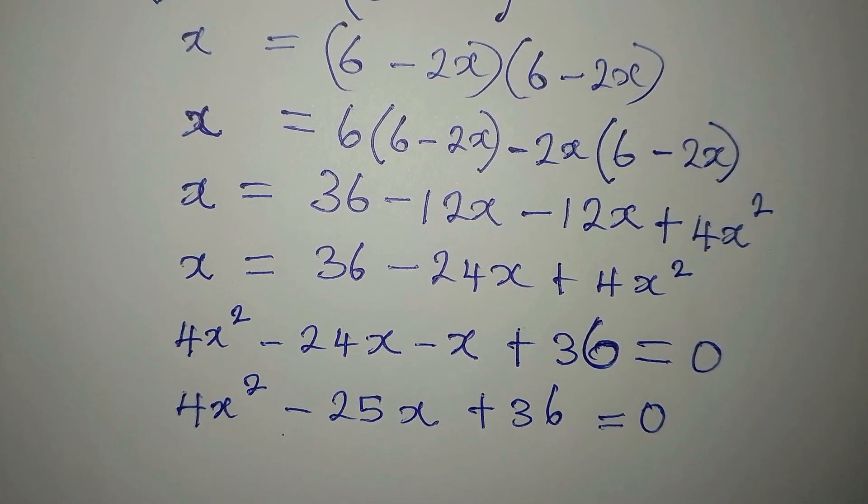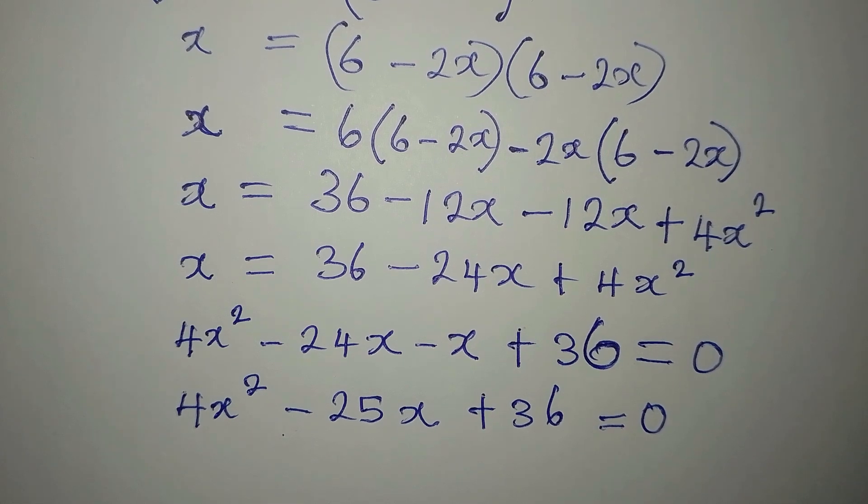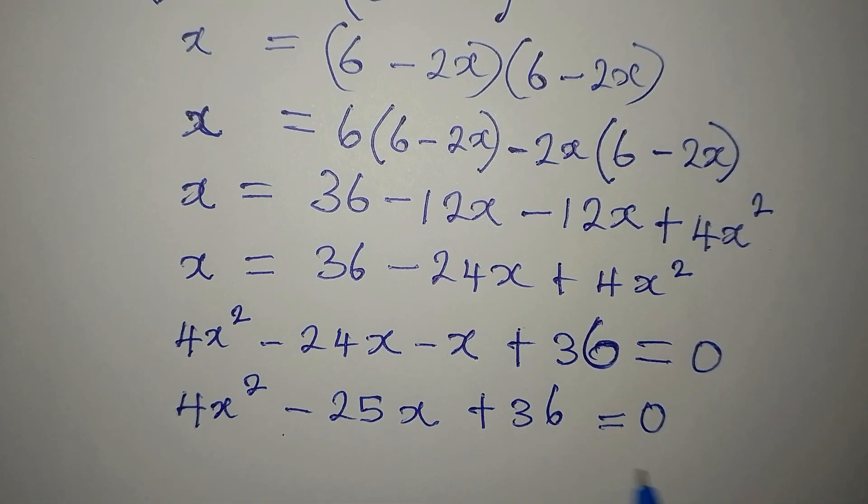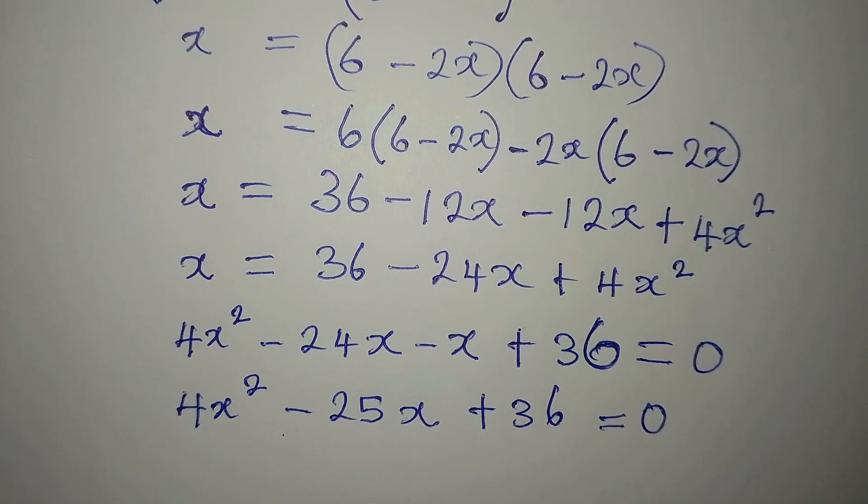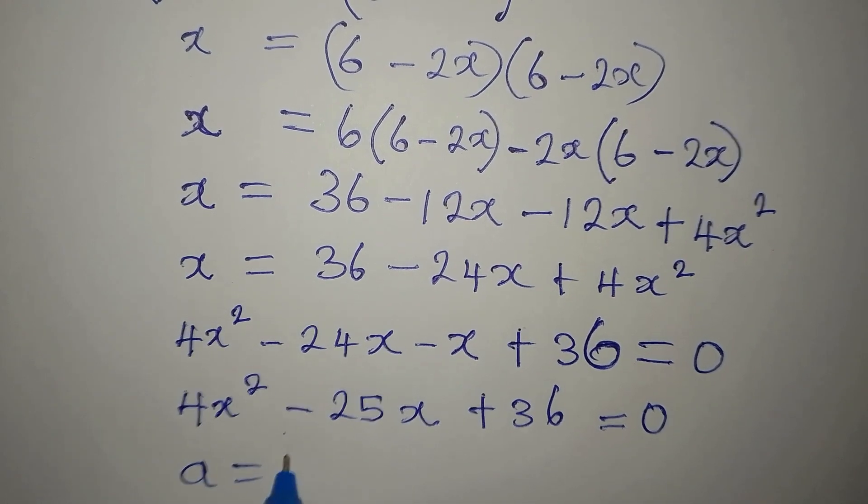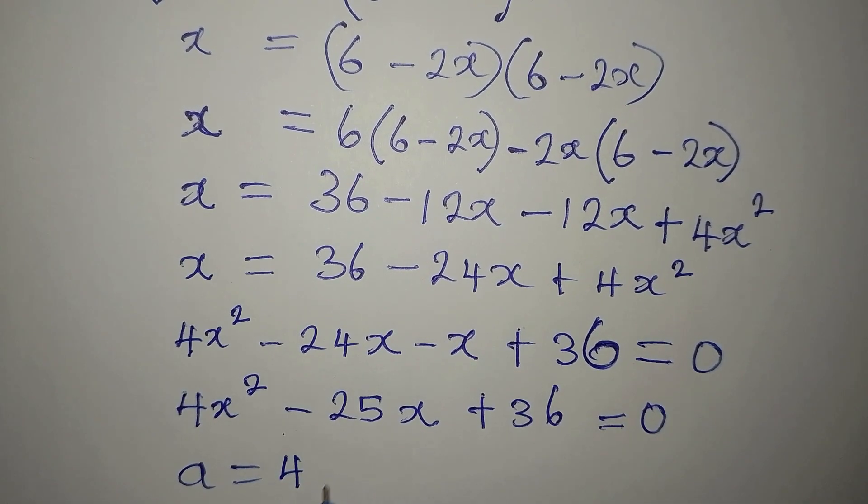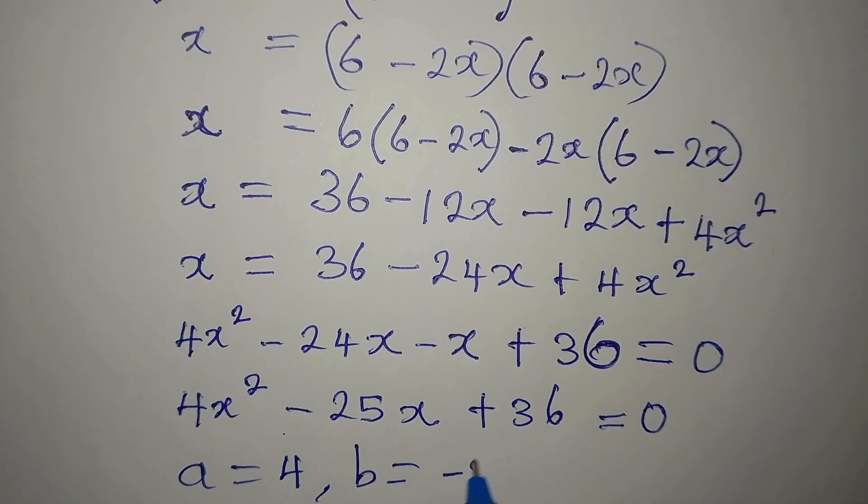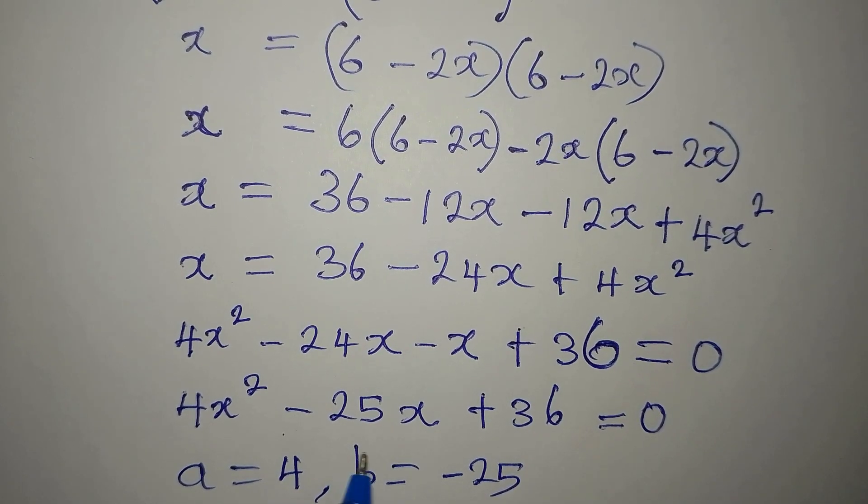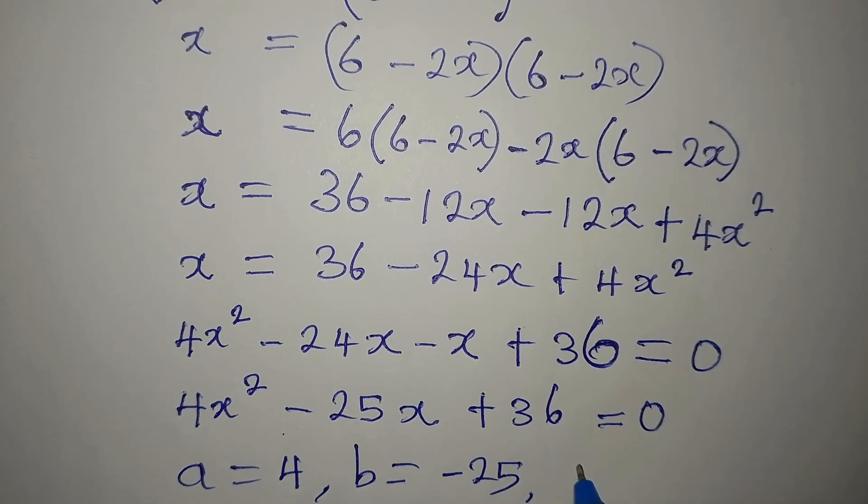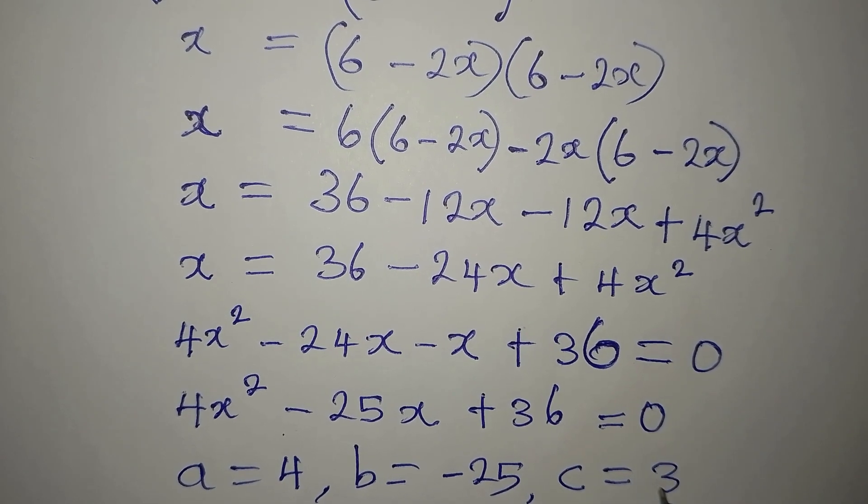And as always, I'll be using the formula method for this. And for the formula, we always have our ABC. So a is 4. B is minus 25. So if you're picking B, this negative has to come with the 25. Then our C is 36.